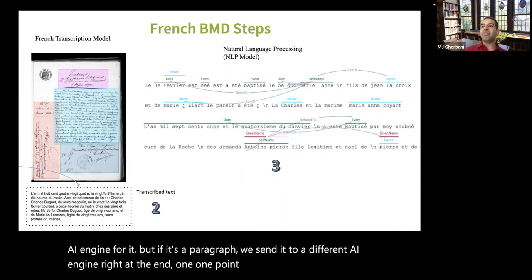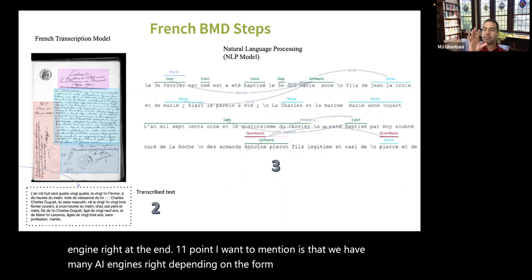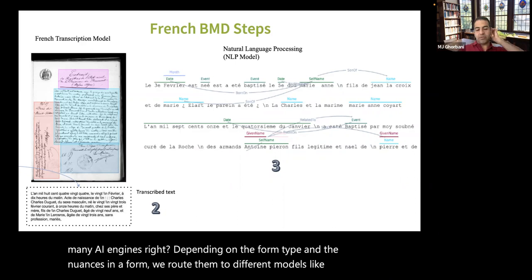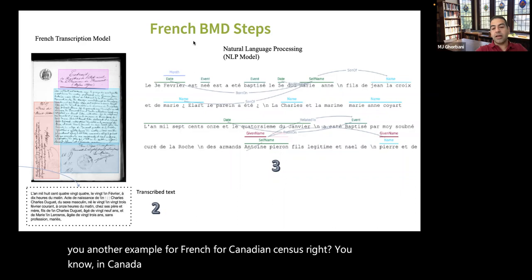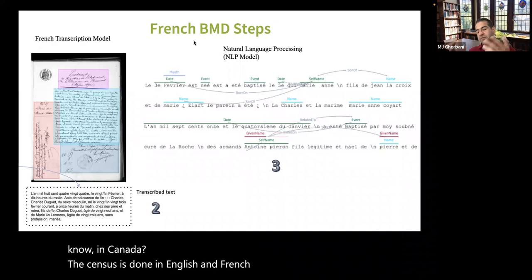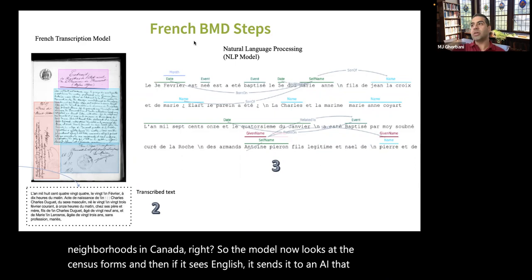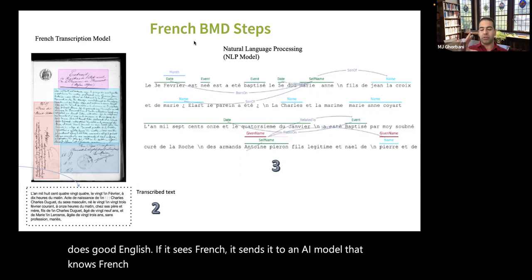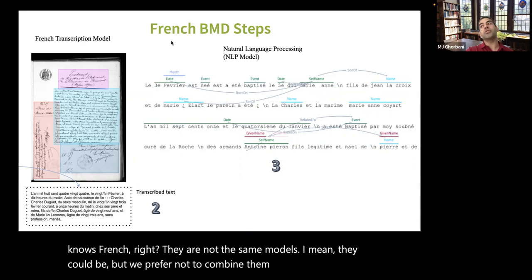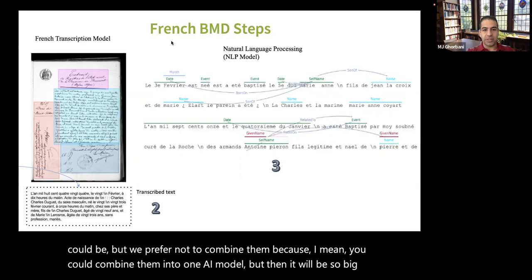We have many AI engines, and depending on the form type and nuances, we route them to different models. For example, in the Canadian census, the census is done in both English and French. The model looks at the census form and if it sees English, it sends it to an AI good at English; if it sees French, it sends it to one that knows French. They're not the same model — you could combine them into one large model, but we prefer to keep them separate.